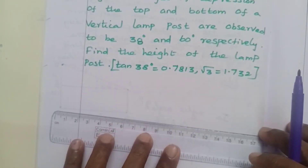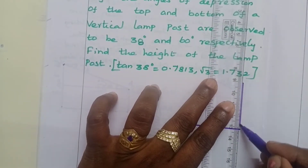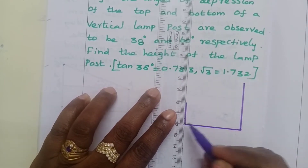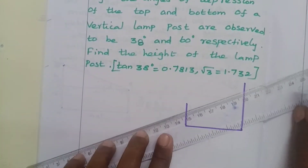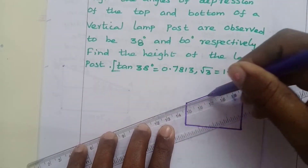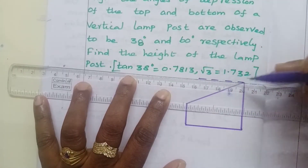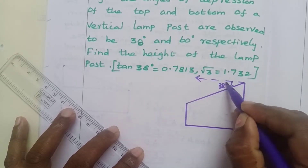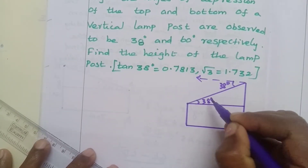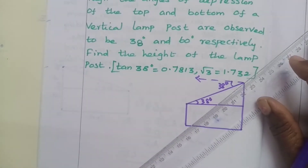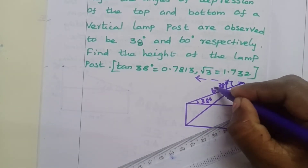Okay, so the lamp post and tower are located. This is the tower, this is the lamp post. The angles of depression of the top and bottom of the vertical lamp post are: the top is 38 degrees, so dropping a horizontal line from the top, this angle is 38 degrees. And the angle of depression to the bottom is 60 degrees, so this angle is 60 degrees.